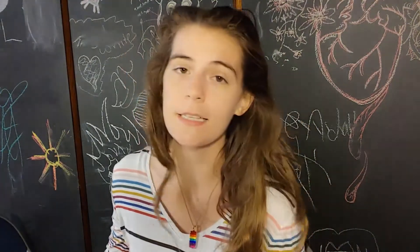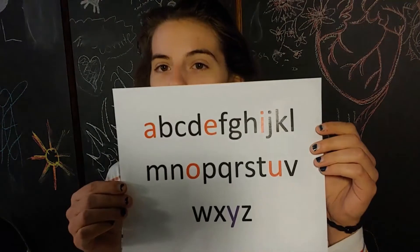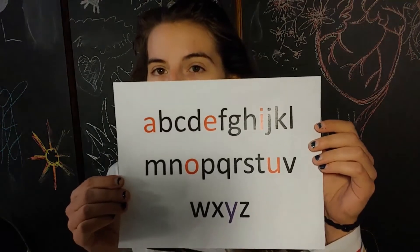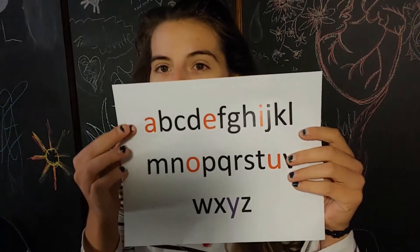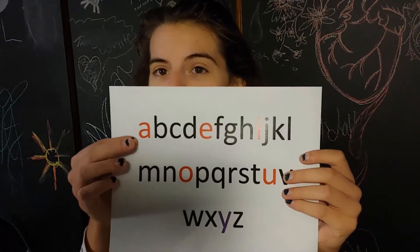Alright, so we're going to get started with some very basic review. Here's the alphabet as you all know. You can see here that the vowels are in red.